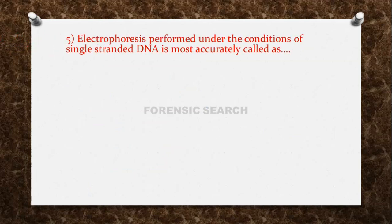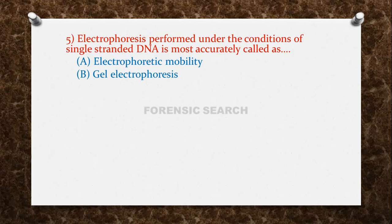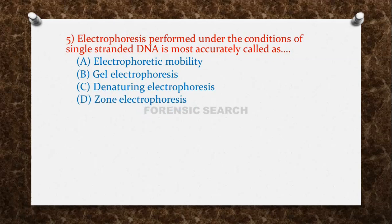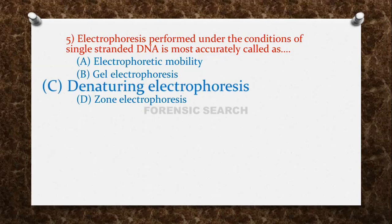The next question: electrophoresis performed under the conditions of single-stranded DNA is most accurately called? Option A: Electrophoretic Mobility. Option B: Gel Electrophoresis. Option C: Denaturing Electrophoresis. Option D: Zone Electrophoresis. The correct answer is option C — Denaturing Electrophoresis.